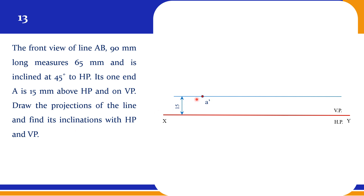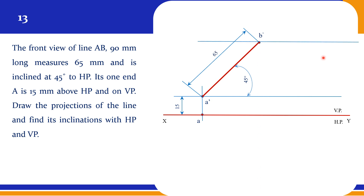The front view is given, very similar to the earlier problem. One end A dash is 15mm above HP and on VP — so A will be on the XY reference line since it is on VP. The top view A is on the XY reference line. We have a 45-degree line, and the front view is at 45 degrees. A dash B dash is obtained directly, and the locus of B dash is drawn straight away. We know the true length is 90mm, so from A dash cut the arc at 90mm. Be careful there is no overlap of these dimensions. B1 dash is obtained.